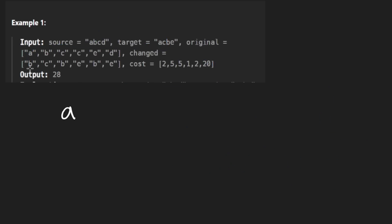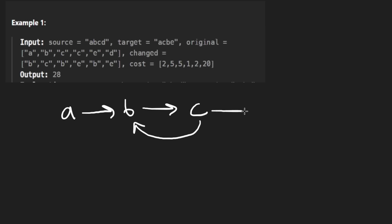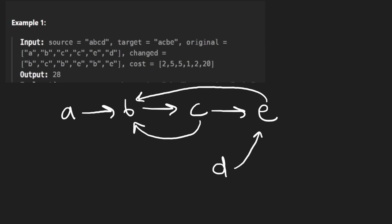Let's first build the graph. Going pair by pair: A goes to B, B goes to C, C can go back to B, C can also go to E, E can also go to B, and D can go to E. Now I'll add the weights: A to B is 2, B to C is 5, C to B is 5, C to E is 1, E to B is 2, and D to E is 20.